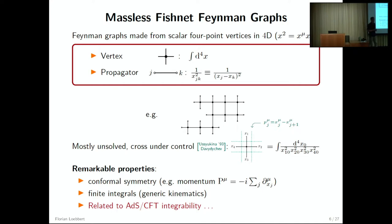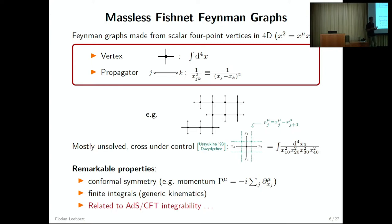I'm interested in this very special class of Feynman integrals — these are position space Feynman rules with propagators given by 1 over x_{jk} squared, where x_{jk} is just the difference of spacetime coordinates and the square means contraction of Lorentz vectors. Every solid bullet corresponds to a loop integration, so in principle these are very complicated integrals. The only integral really under full control is this most simple example, the cross or box integral. Despite being very complicated and mostly unsolved, these graphs have nice properties: conformal symmetry realized by differential operators, they are finite, and they are related to ADS-CFT integrability.